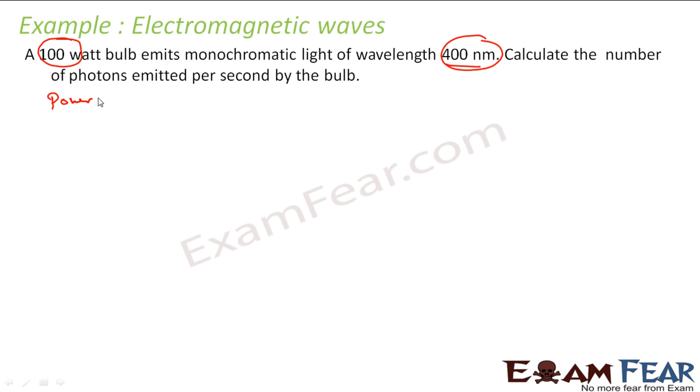So when you say 100 watt, I say power is 100 watt. This means what? That means 100 joules per second is my power. So in one second, this much energy is given from the bulb.